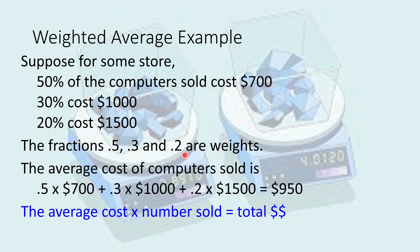The same idea can be applied in business. If in a store 50% of computers are sold at $700, 30% at $1,000, and 20% at $1,500, the weighted mean is: 0.5 times 700 plus 0.3 times 1,000 plus 0.2 times 1,500, divided by 1 (since 50+30+20 = 100%). The weighted mean in this case is $950.